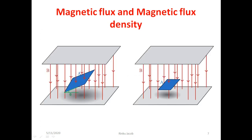In the figure shown to the left, the area vector A is making some angle with the magnetic field vector B. But in the figure to the right, the area vector and the magnetic field vector are in the same direction, so the angle between them is zero. That means the magnetic flux is maximum.